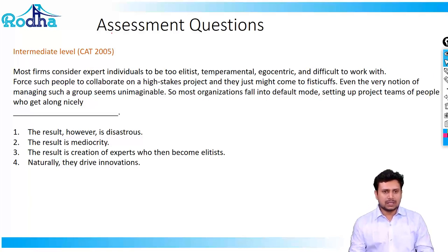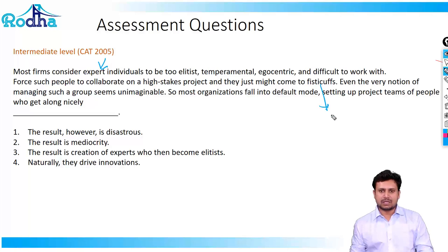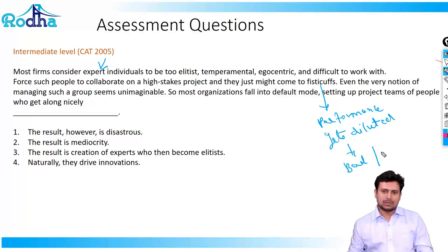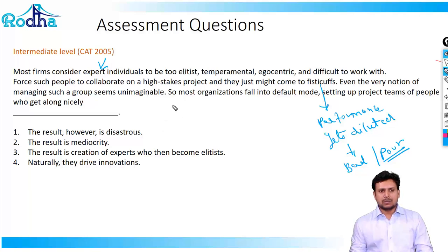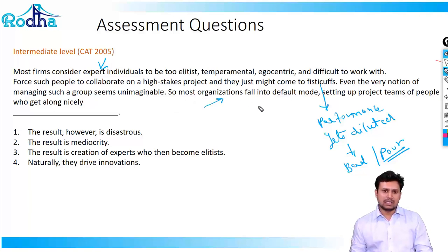The next question says most firms consider expert individuals to be elitist, temperamentally egocentric and difficult to work with. Force such people to collaborate on a high-stakes project and they just might come to fisticuffs — meaning their performance becomes poor. Even the very notion of managing such a group is unimaginable. So most organizations fall into default mode, setting a project team of people who get along nicely rather than selecting for highest pedigree.